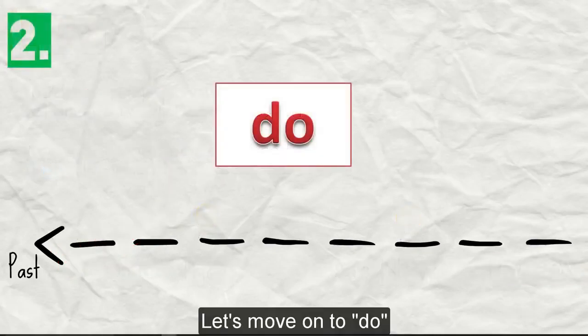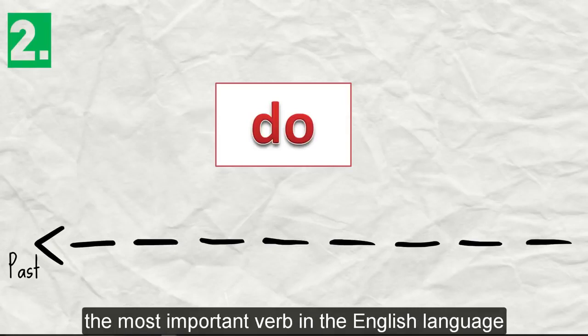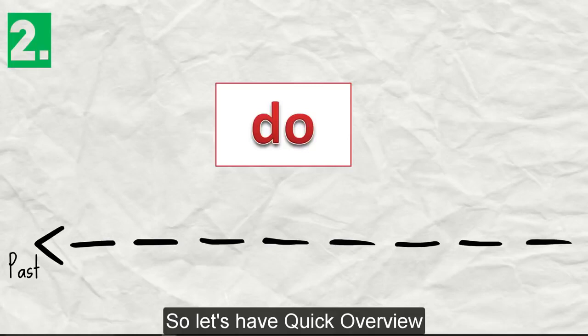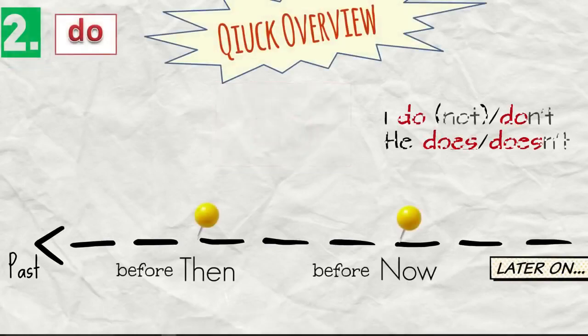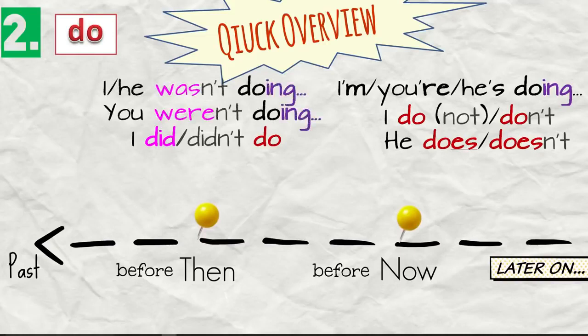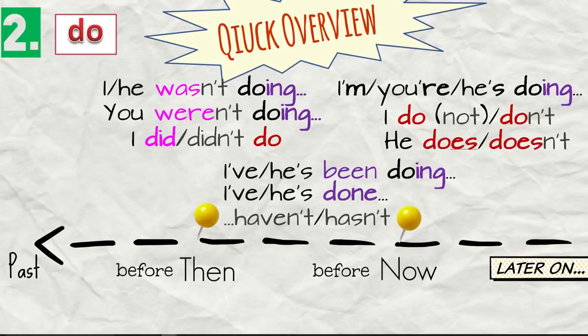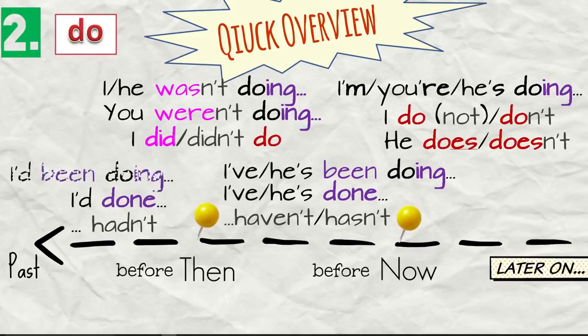Let's move on to do. We may say it's the second most used or the most important verb in the English language. So let's have a quick overview. So for example, we'll say I do or I don't. He does, he doesn't. I'm doing, you're doing, he's doing. I did or didn't do. I was doing or you were doing or the negative. I wasn't, you weren't doing. I've done, he's done. I've been doing, he's been doing. I'd done or I hadn't done. I'd been doing.